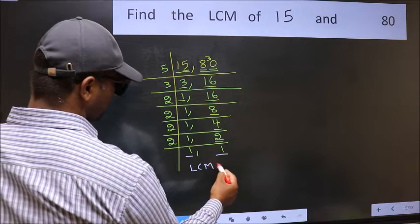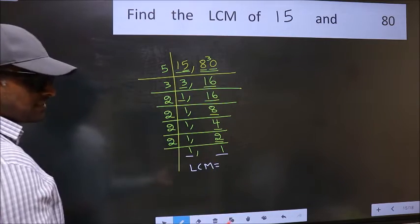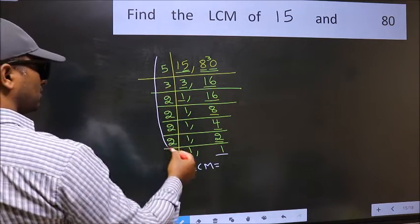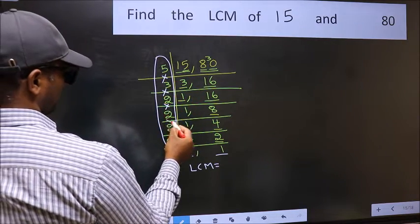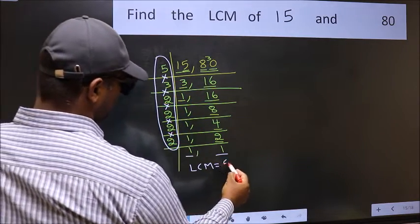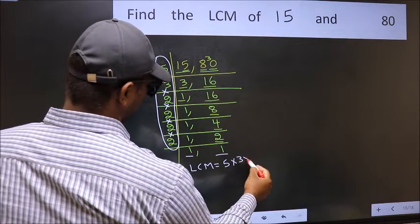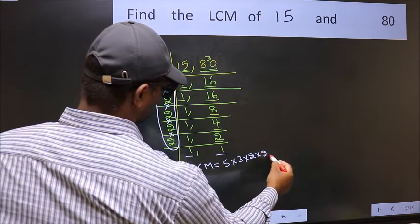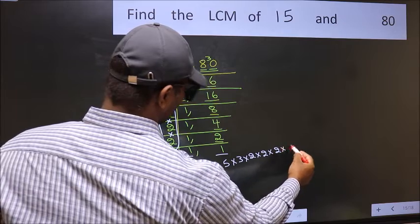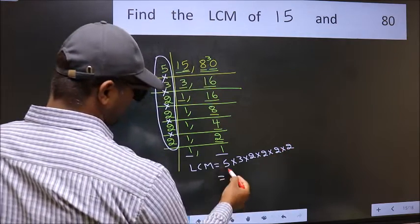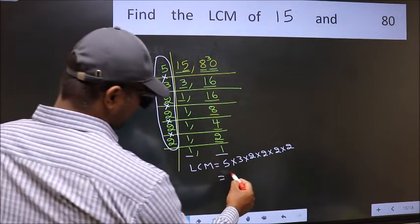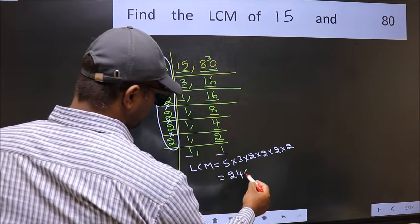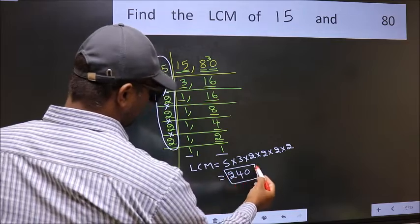So our LCM is the product of these numbers. That is 5, 3, 2, 2, 2, 2. When we multiply these numbers we get 240 as our LCM.